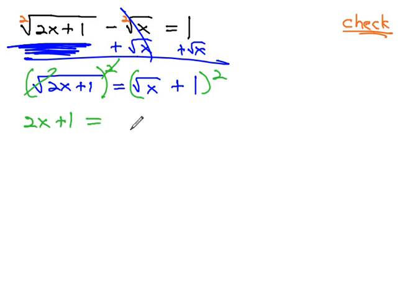On the other side, because we're squaring a binomial, we must remember there's three parts to our result. First, we square the first term. The square root squared is just x, and then we multiply them together twice. 1 root x plus 1 root x is 2 root x. And then finally, we square the last term. 1 squared is 1.